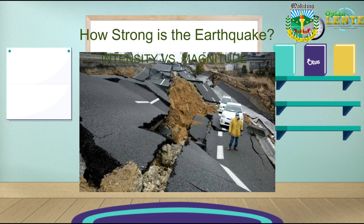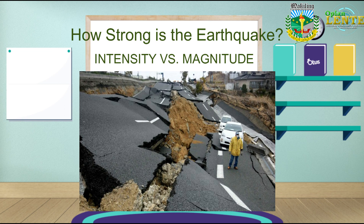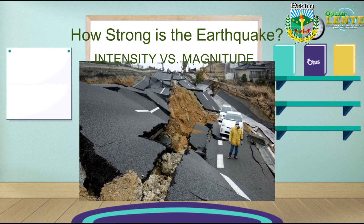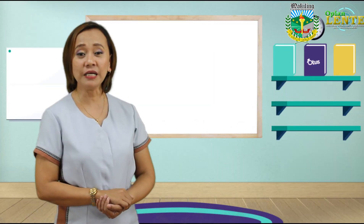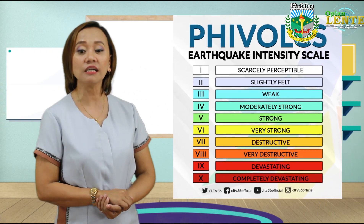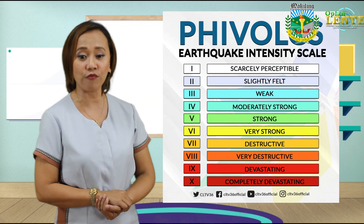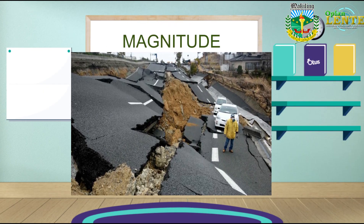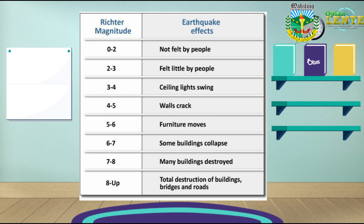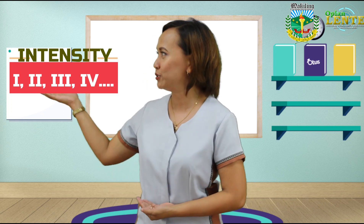How strong is the earthquake? An earthquake may be described in two ways: intensity and magnitude. The intensity of an earthquake gives us an idea of how strong or weak the shaking is, or simply by describing the effects of the earthquake on people or surroundings. The Philippine Institute of Volcanology and Seismology, or PHIVOLCS, uses the PEIS or PHIVOLCS Earthquake Intensity Scale to describe the intensity of earthquakes in the Philippines. Magnitude is the measure of the energy released — the higher the magnitude, the stronger the earthquake. Intensity is expressed using Roman numerals, while magnitude uses a numerical scale.